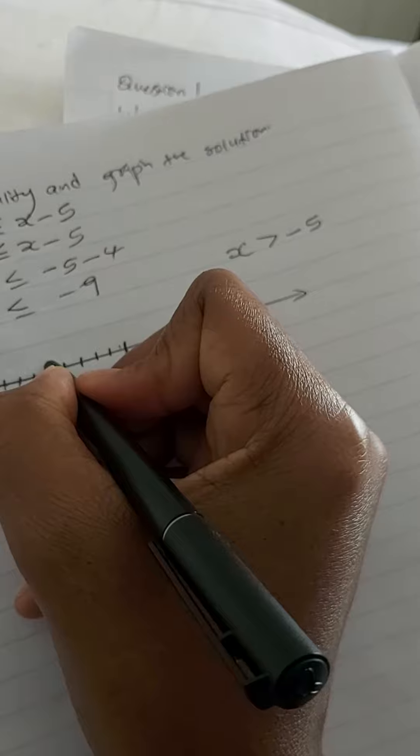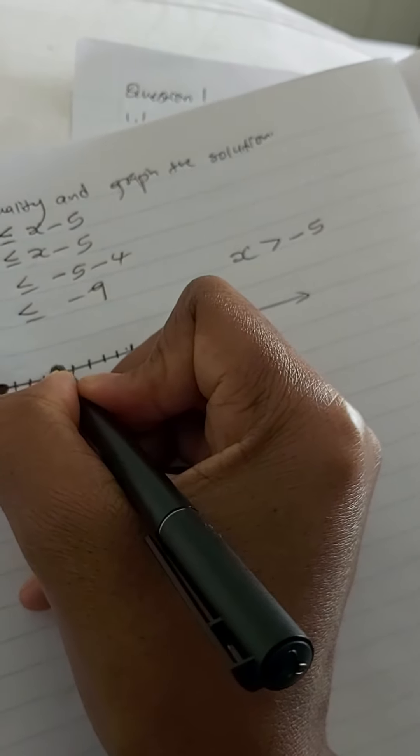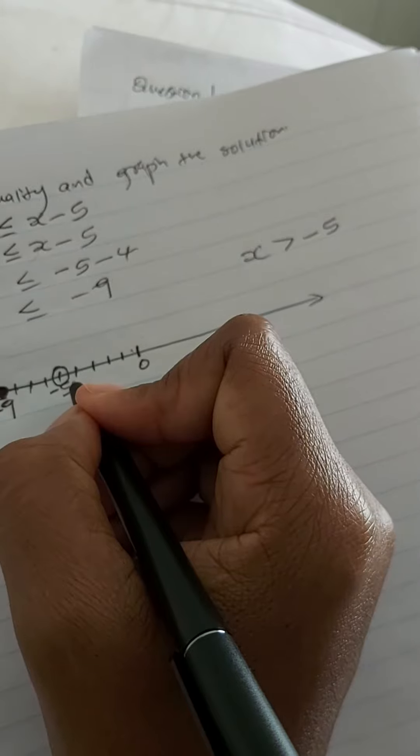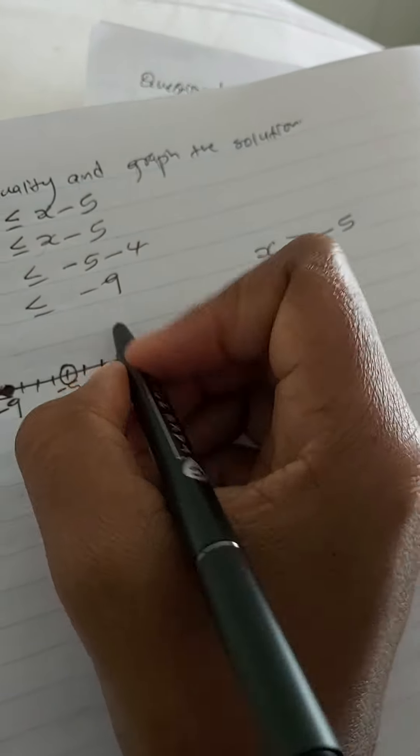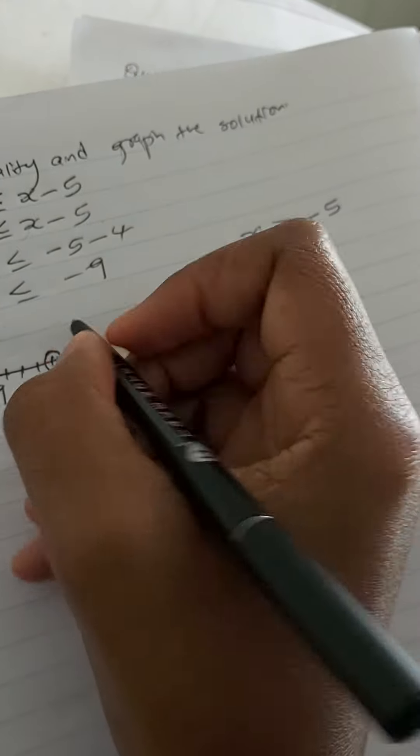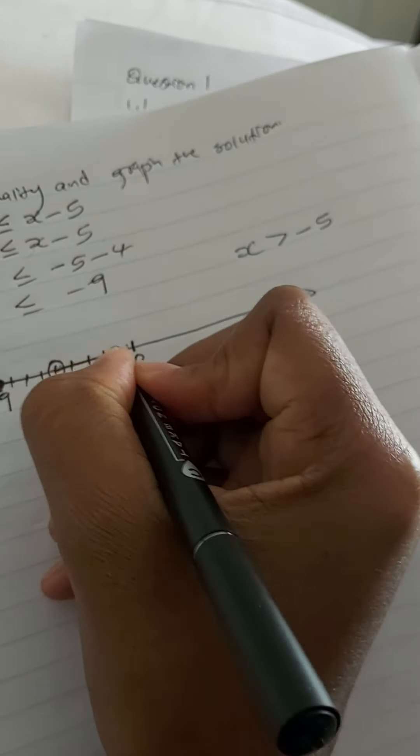So if there's no equal sign, you've got just an open circle, not a closed circle. Then this is greater than minus 5, so our arrow will look that way.